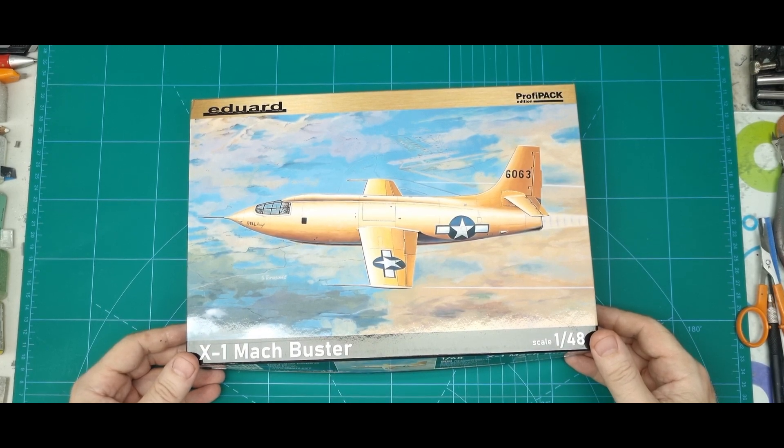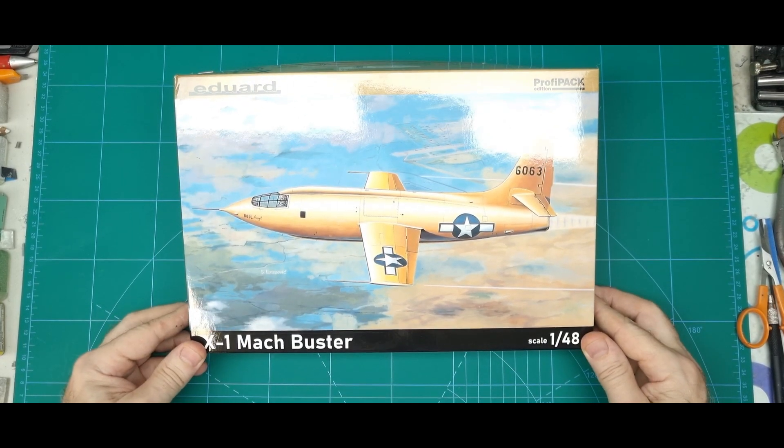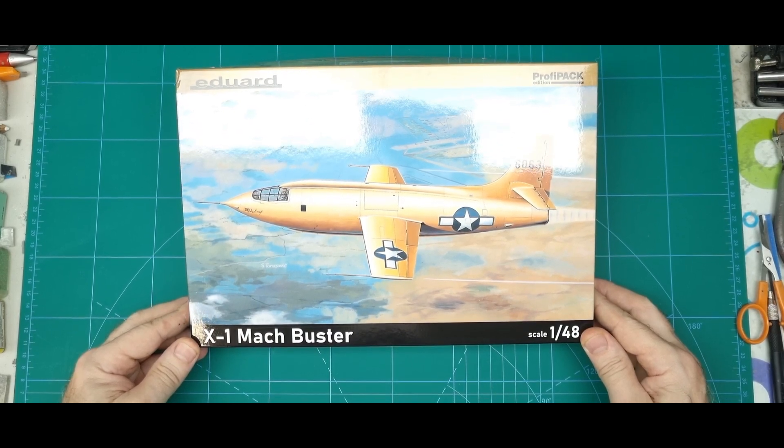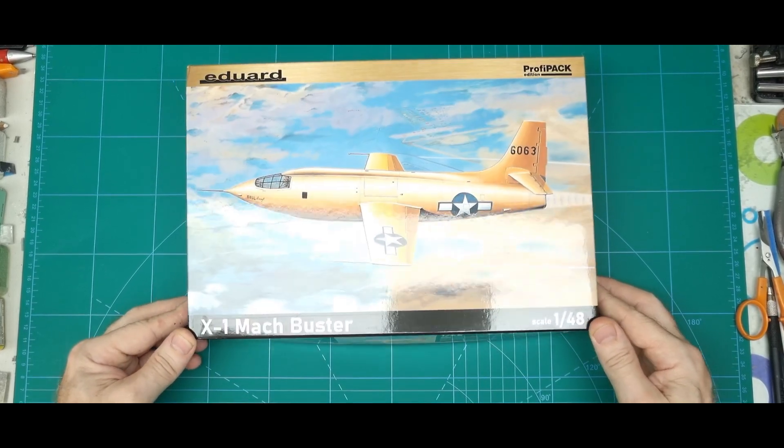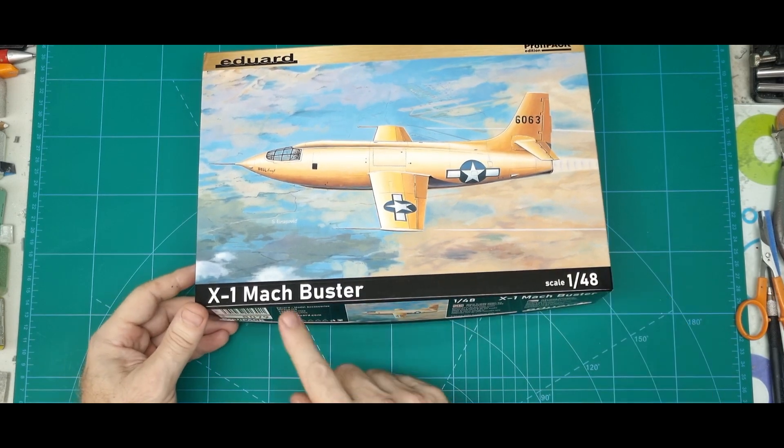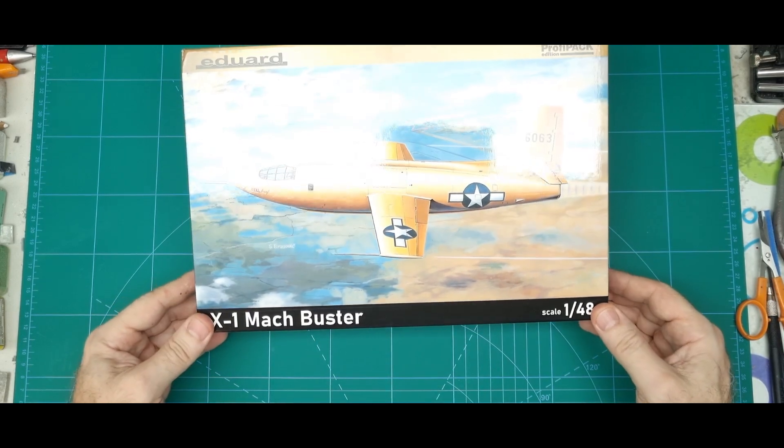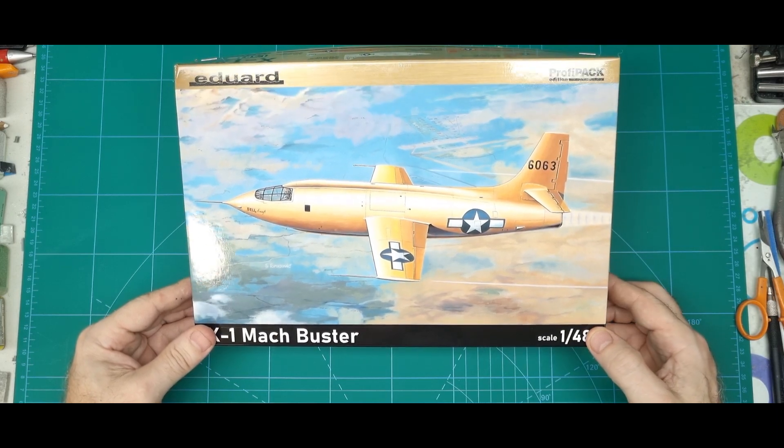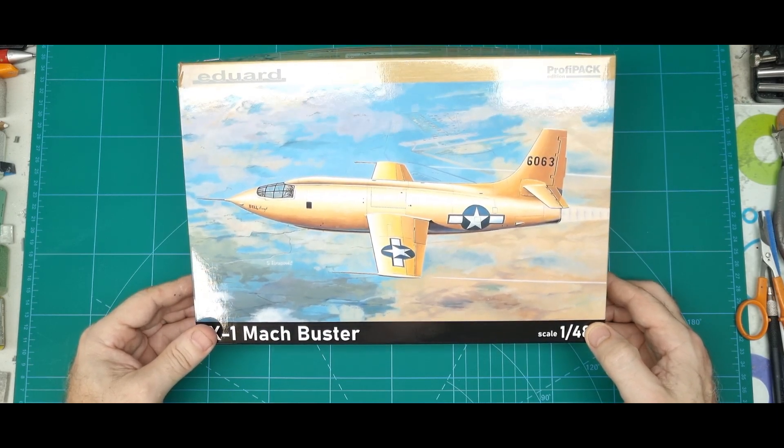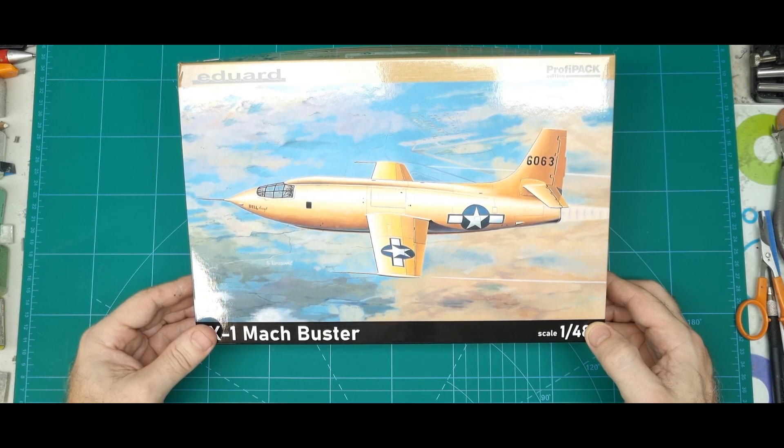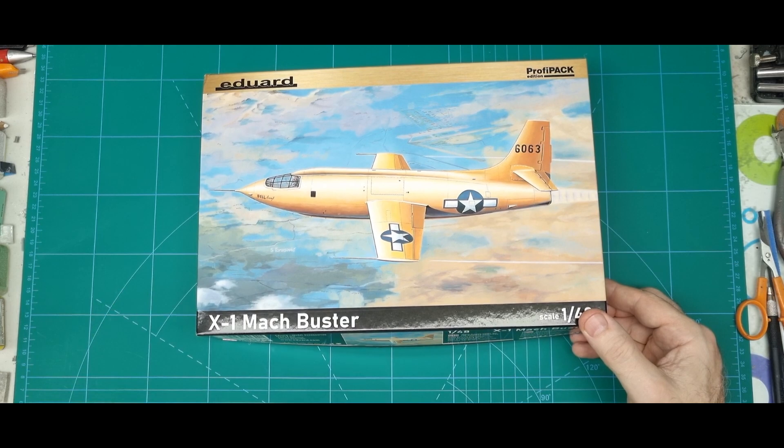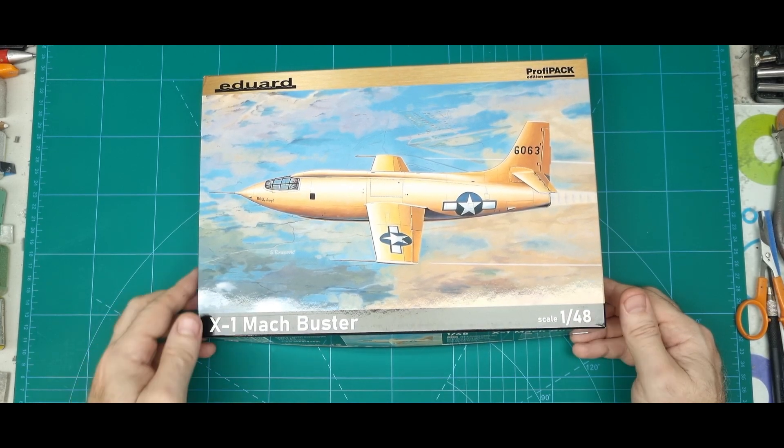So this has just been re-released from Eduard, the 1:48 Bell X-1. This boxing is the Mach Buster. It's Eduard tooled, tooled in 1997 and it's been boxed five times since then, so not a lot. I thought it might have been a bit more popular but maybe not.